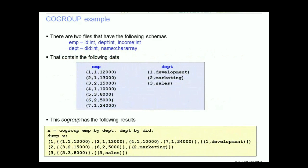Co-group example. Assume a relation EMP with three fields: ID, DEPT, and income, and a second relation DEPT with two fields: DID and name.